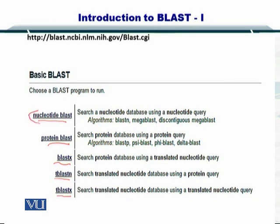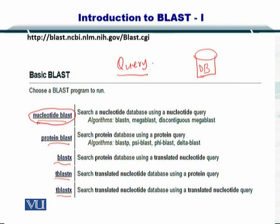For nucleotide BLAST, you simply search for nucleotides. You have a query nucleotide — the query is the sequence that you are trying to search within the database. In the case of nucleotide BLAST, your query sequence is a nucleotide sequence, and your database is also a nucleotide database.